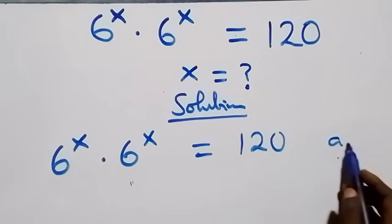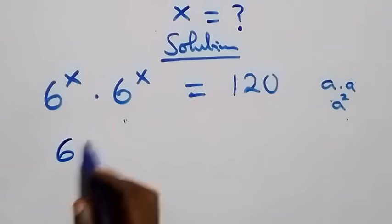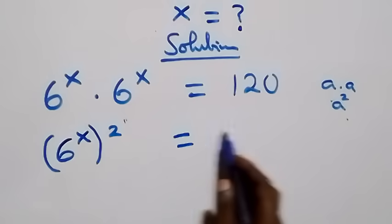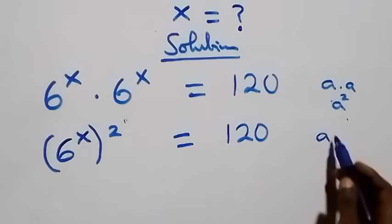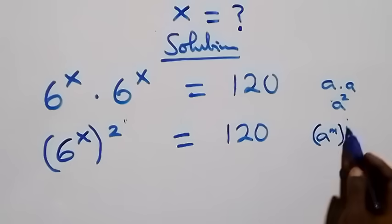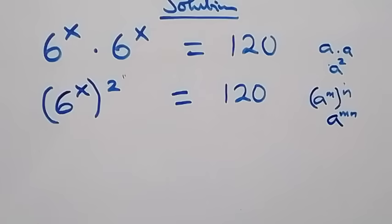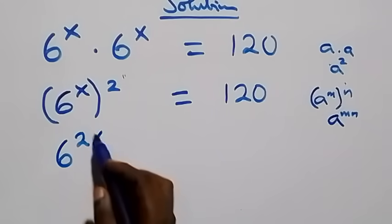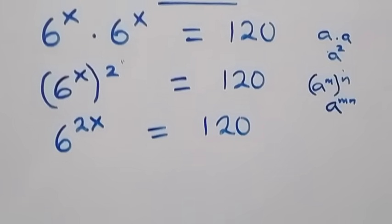This follows when we have a times a, which we can write as a squared. So we have 6 raised to power x, all squared, equals 120. Then by the law of indices, when we have a raised to power m raised to power n, this equals a raised to power mn. So the powers multiply, and what we have becomes 6 raised to power 2x equals 120.